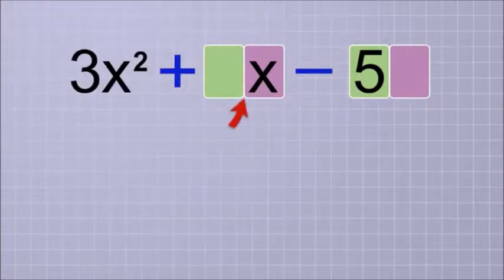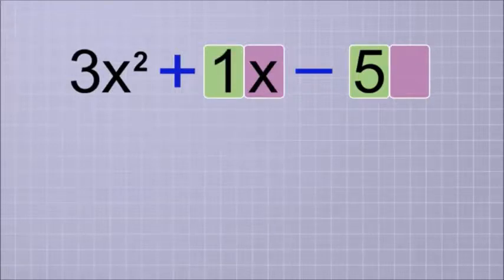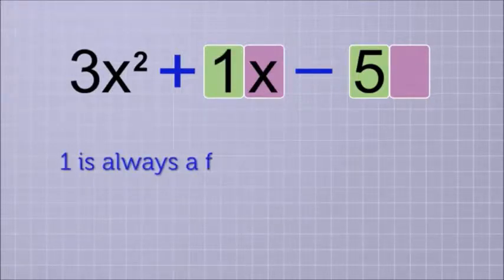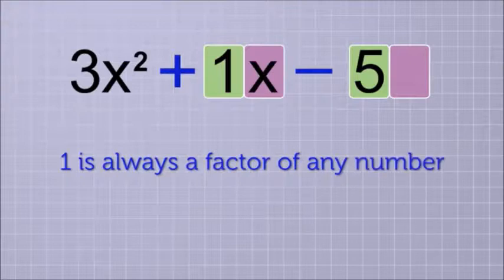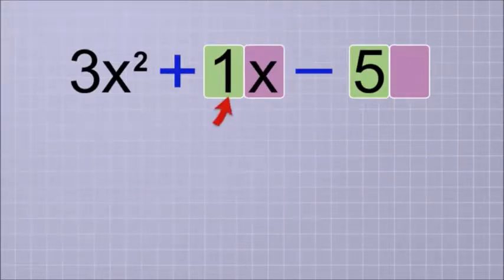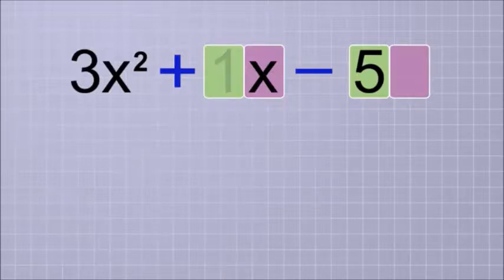Well, the middle term is easy to explain. There really is a number part there, but it's just one. Do you remember how 1 is always a factor of any number? But since multiplying by 1 has no effect on a number or variable, we don't need to show it. So if you see a term in a polynomial that has only a variable part, you know that the number part of that term is just 1.